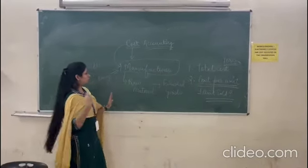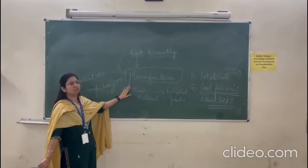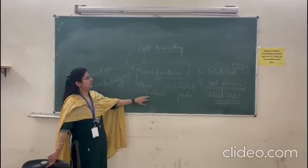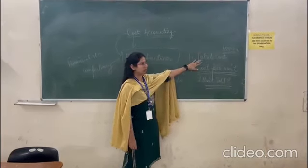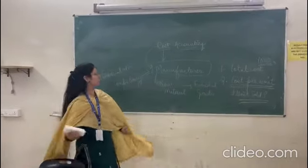So the basic concept of cost accounting is, it is done for manufacturers. Manufacturers are different from retailers because they produce the goods and sell them. These manufacturers use cost accounting to find two different things. That is total cost and cost per unit. Now how we do this calculation is.